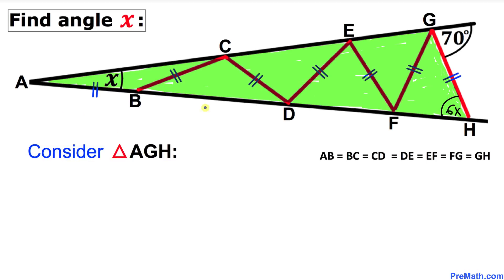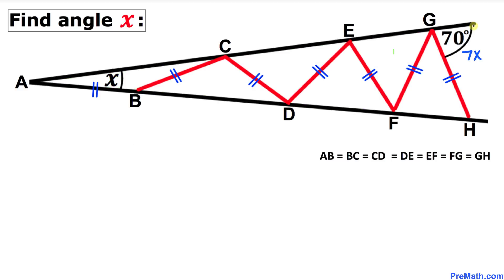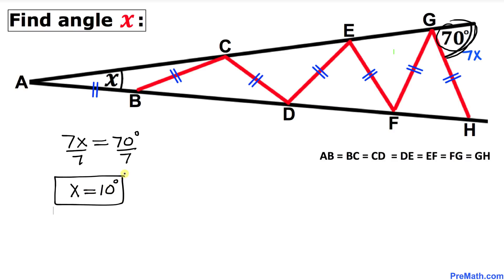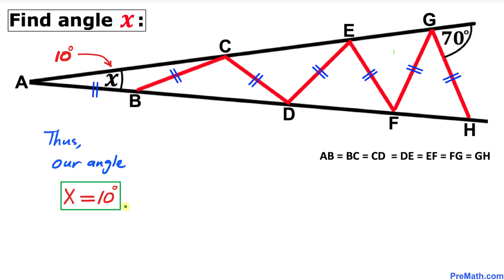Let's consider triangle AGH. Angle G is our exterior angle and it equals the sum of the two opposite interior angles X and 6X. So angle G equals X plus 6X, which makes 7X. We know that angle G is 70 degrees, so we can equate: 7X equals 70 degrees. Dividing both sides by 7, X equals 10 degrees. That's our final answer. Thanks for watching and please don't forget to subscribe to my channel for more exciting videos.